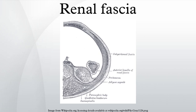The renal fascia, or Gerota's fascia, is a layer of connective tissue encapsulating the kidneys and the adrenal glands. The deeper layers below the renal fascia are, in order, the adipose capsule of the kidney, the renal capsule, and finally the parenchyma of the renal cortex. The spaces about the kidney are typically divided into three compartments: the perinephric space and the anterior and posterior pararenal spaces.